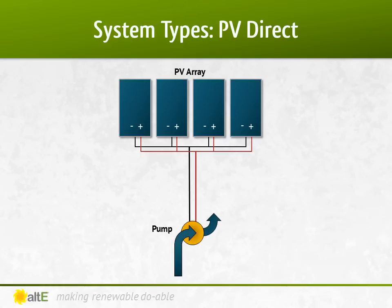It's a very basic system where the solar panels make the power and the pump uses what it can get. When the sun is bright and the panel is making more power, the pump will pump faster than when it is overcast or early morning or late afternoon. The key is to use the power when you have it and not need it when the sun isn't available. In the example of a pump, you'll be pumping to a tank or cistern during the day, allowing you to use the water all day and night without having to utilize batteries. It's easier to store water than power.